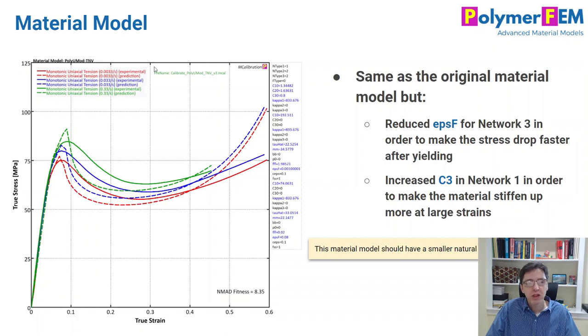So I'm using the same TNV model, but I changed two of the parameters. I changed the drop in stress to be more rapid after the yield. So it goes down much quicker. As you can see here, the dash lines are predicted and they drop faster than it did before.